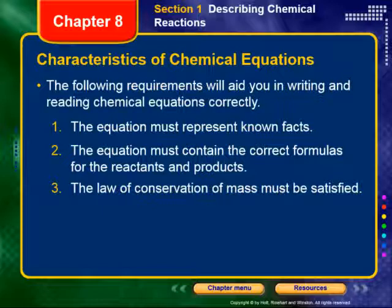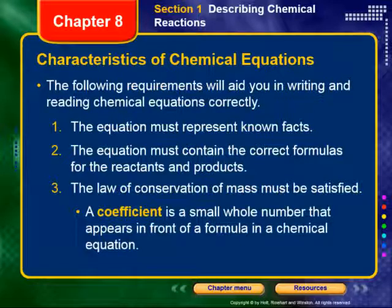Then lastly, the law of conservation of mass must be satisfied. This will be our check at the end of several problems. The way we tweak the equation to ensure this is by changing coefficients — we are not changing subscripts. Changing subscripts would change the substance itself into a completely different chemical. To balance equations and satisfy the law of conservation of mass, we can only change the coefficients, which changes the relative amounts of the substance in the reaction.